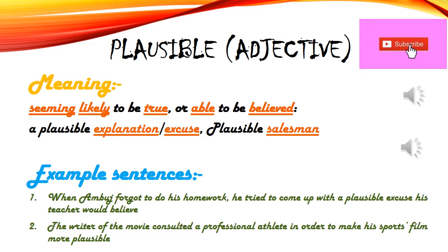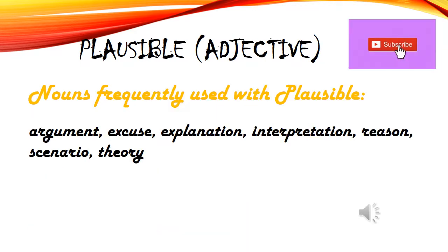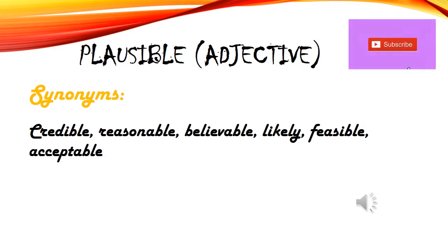Plausible ki comparative aur superlative degree bhi hoti hai: more plausible aur most plausible. Various nouns jo frequently plausible ke saath use hote hain: plausible argument, plausible excuse, plausible explanation, plausible interpretation, plausible reason, plausible scenario, plausible theory.